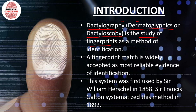A fingerprint match is widely accepted as the most reliable evidence for identification purposes. Fingerprints are so unique that no other evidence is more reliable. No two persons share a similar fingerprint, hence they are the most reliable evidence for identification.